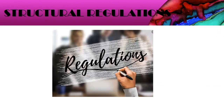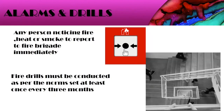Now we discuss structural regulations applicable in India as laid down by municipal authorities for hotel projects. There should be fire alarms at all possible locations, and any person who notices fire, heat, or smoke must report it to the fire brigade immediately and activate the fire alarm. Additionally, fire drills must be conducted in the hotel once every three months, and all occupants must participate.